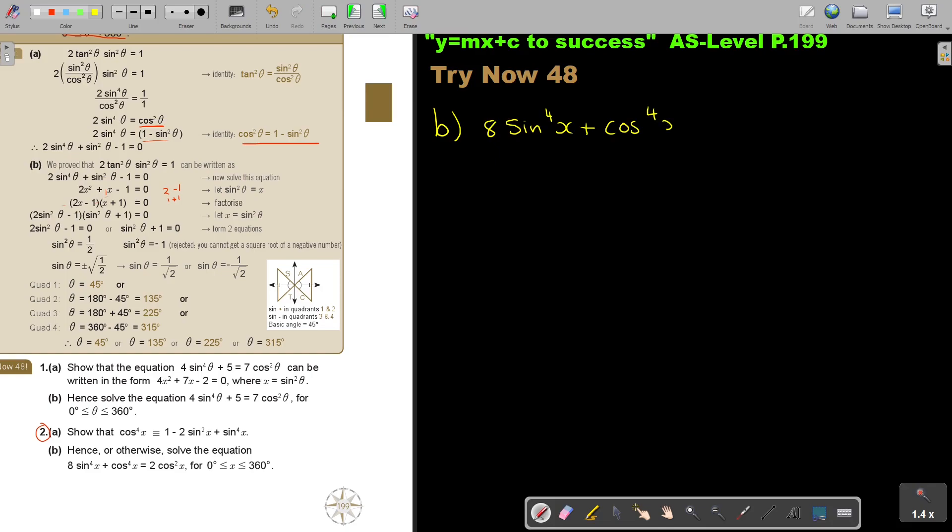And again, stop, make sure your calculator is on degrees, because they tell you x is bigger and equal to 0 and smaller and equal to 360 degrees. Let's start. Now let's see if this one can help me. I have this. So this cos 4x, I can substitute because this is sin. I want to make everything sin. So let's just start with this side.